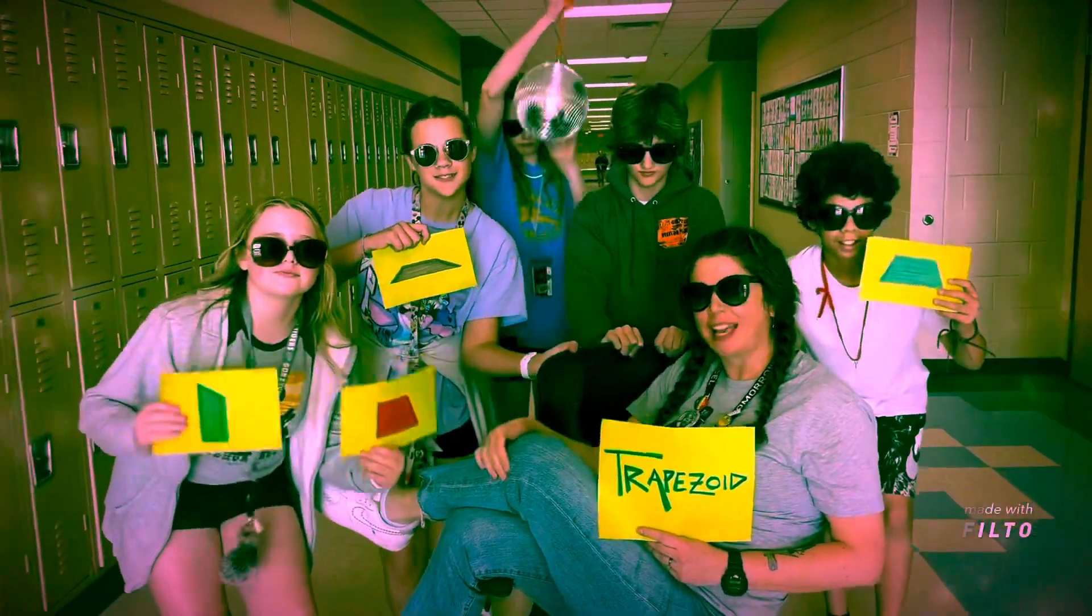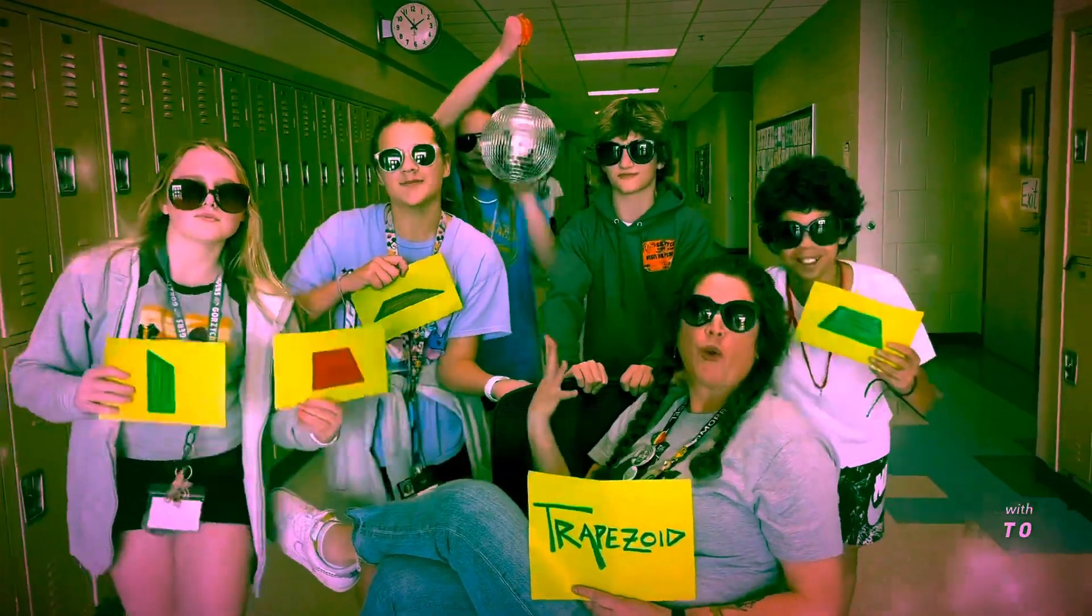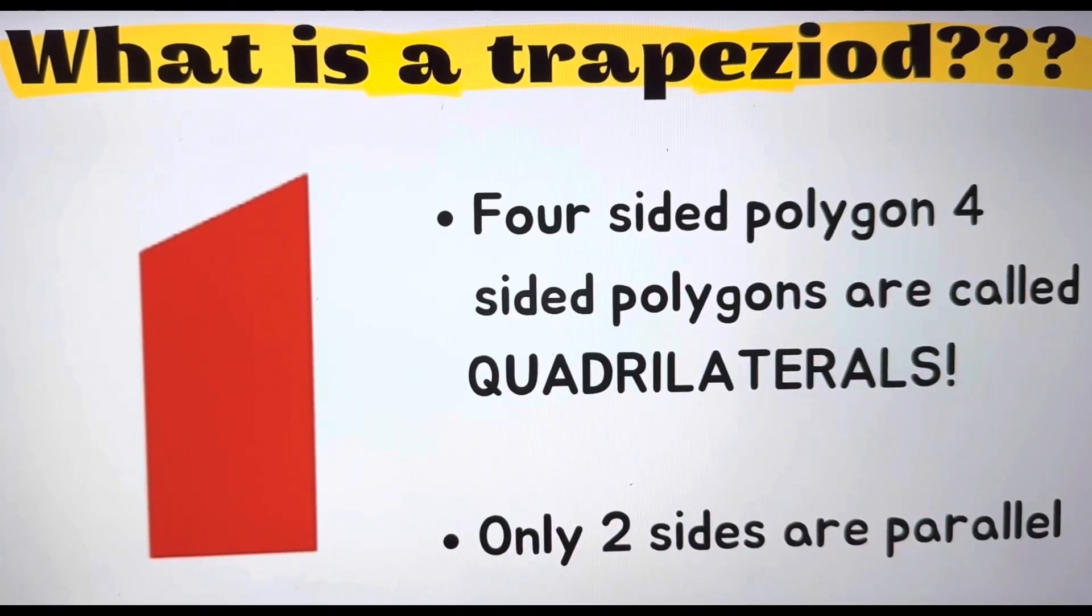Four sides. This shape's got two that are parallel, two are not. It's a quadrilateral, but two sides are parallel. Got it?